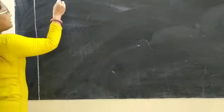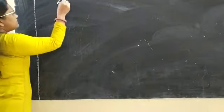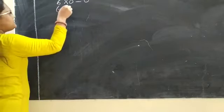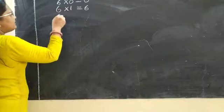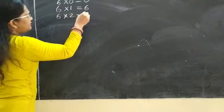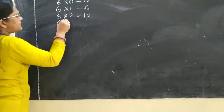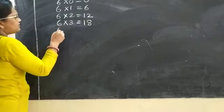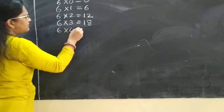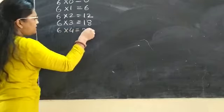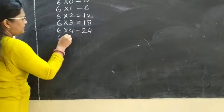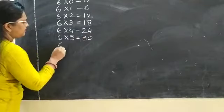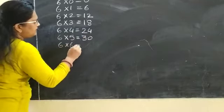Yes. Let's start. 6 times 0 is 0. 6 times 1 is 6. 6 times 2 is 12. 6 times 3 is 18. 6 times 4 is 24. 6 times 5 is 30. 6 times 6 is 36.